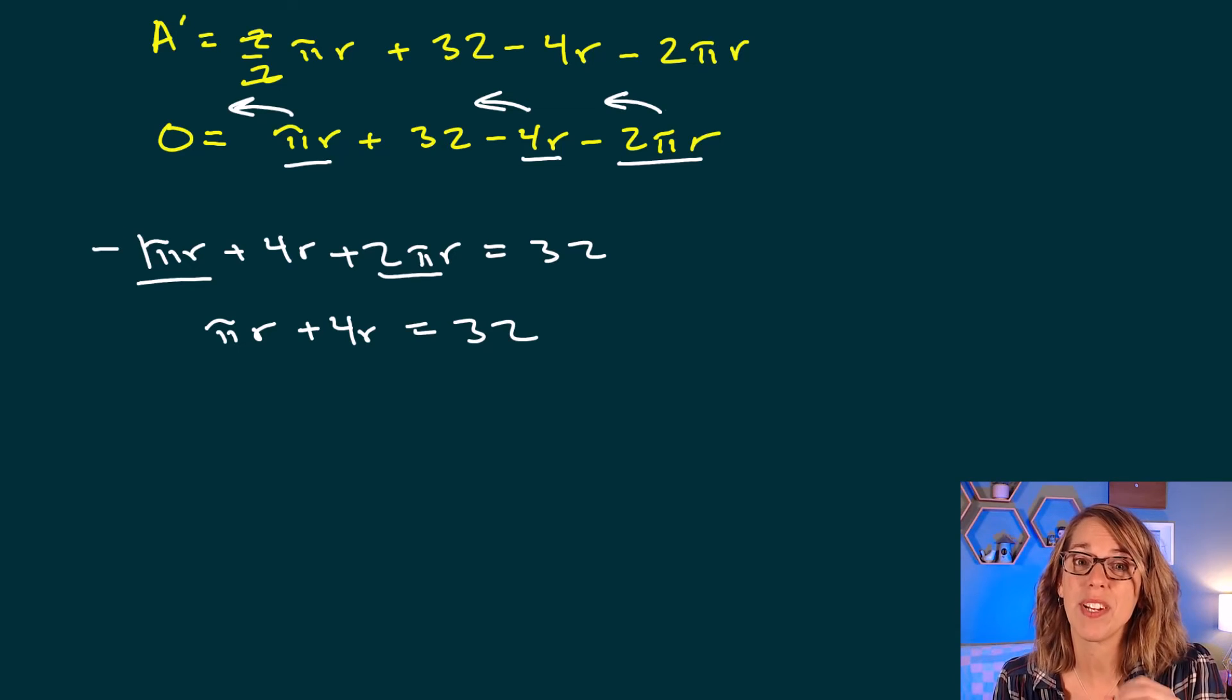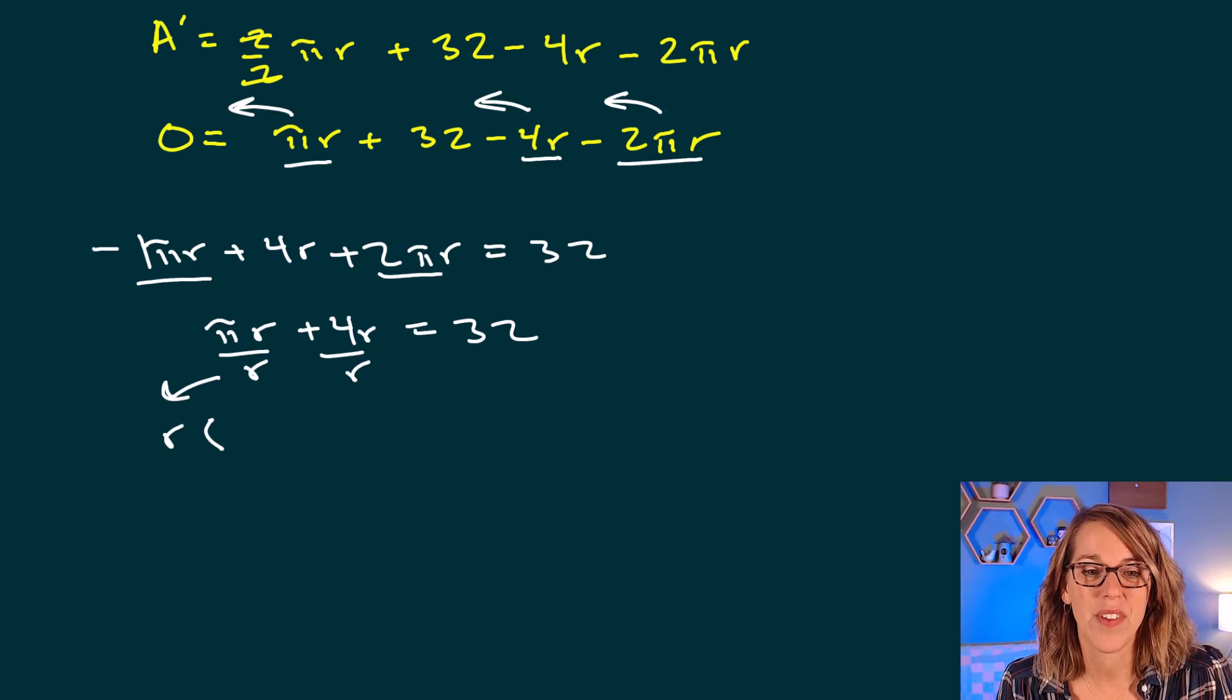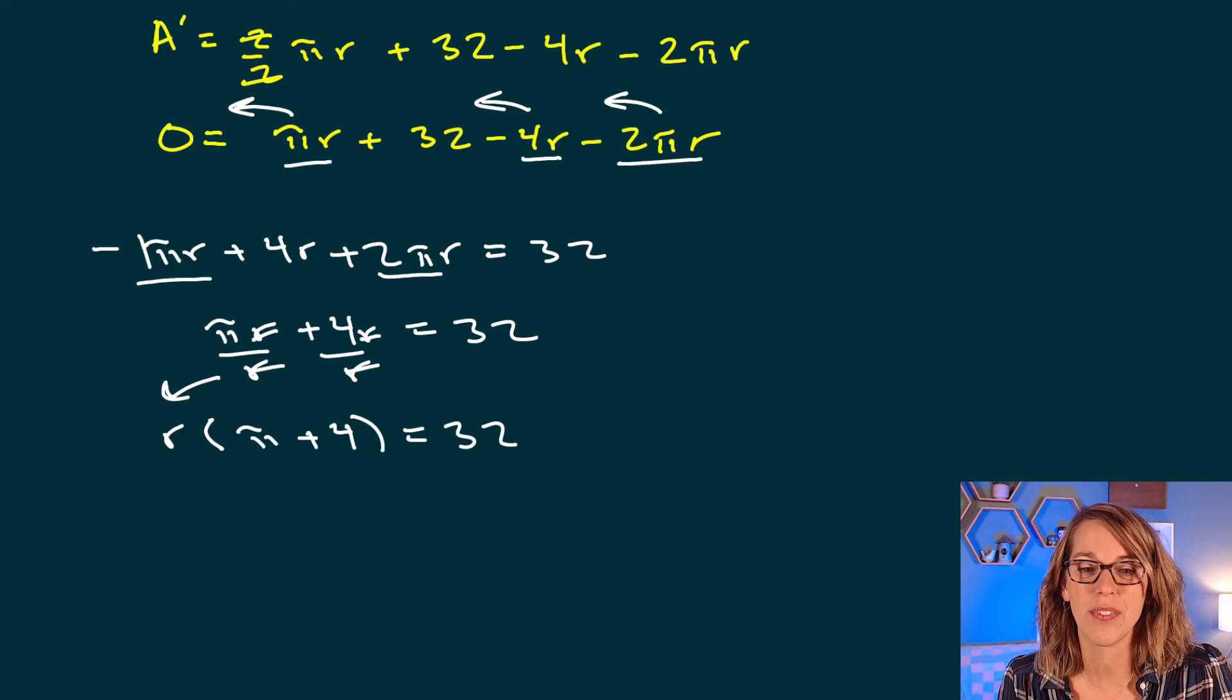r is in two of these terms, so I'm going to factor out that r, which you can think of as dividing by r and then recording that out in front. Okay, when I divide the r out, I get pi from the first term and I get 4 from the second term, so plus 4 is equal to 32.